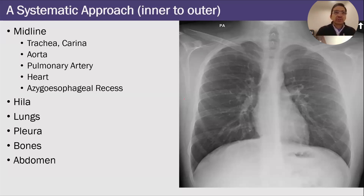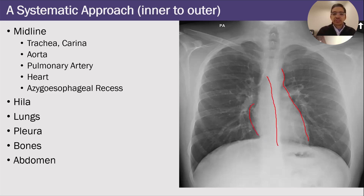What I do — and again, it's not important that you follow my approach — is I start with the midline structures. So the trachea and the carina, the aorta right here, the pulmonary artery, and the heart, then the azygoesophageal recess, then the hila right here.